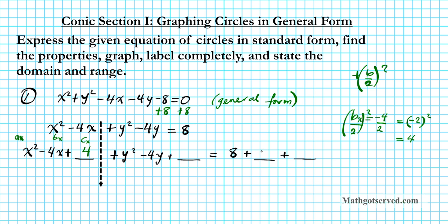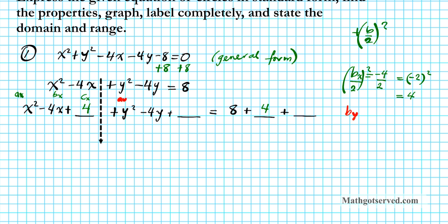Now in the y world, b of y is negative 4. We divide by 2 to get negative 2, then square it — negative 2 squared is 4. So we insert a 4 there to have a perfect square trinomial in the y world, and we also have to insert a 4 on the right side to preserve equality.